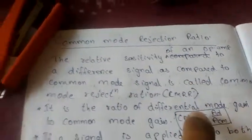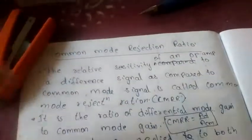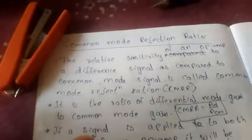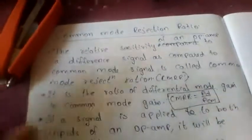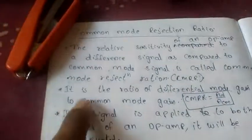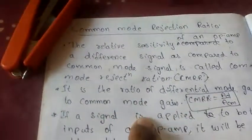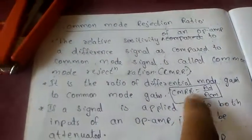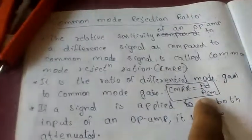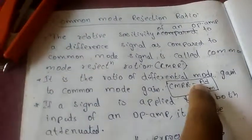It is the sensitivity to differential signal compared to common mode signal. Mathematically, it is the ratio of differential mode gain to common mode gain. That is, CMRR equals the ratio of differential mode gain Ad to common mode gain ACM.